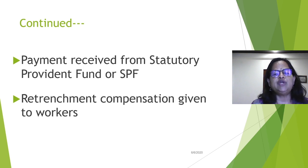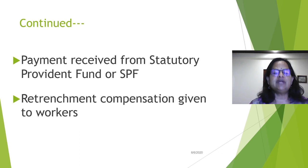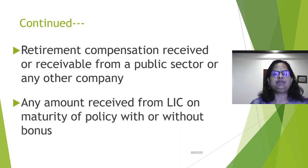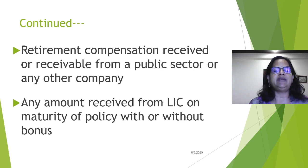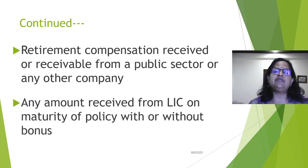Next: retrenchment compensation given to workers. During this lockdown period, you might have heard that many organizations are terminating employees because they don't have money to pay salaries. They give a compensation — maybe two, three, or four months' salary — as a token for the period until the employee finds another job. That compensation will be exempted. Also, retirement compensation received from a public sector or any other company: if you have put in 30 or 35 years of service in a company, whether public sector or private sector, you are entitled to some compensation at the time of retirement, and that will also be completely exempted.